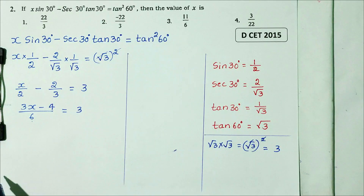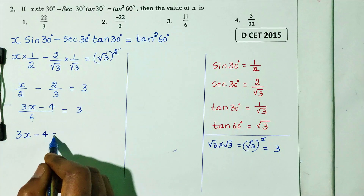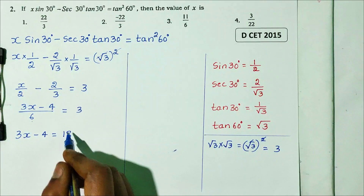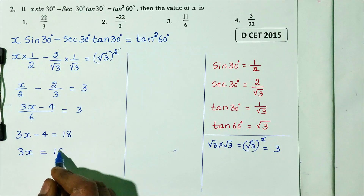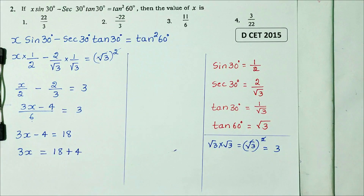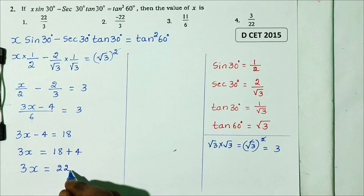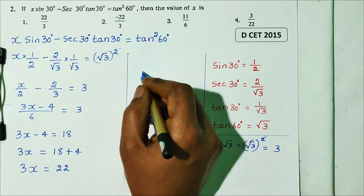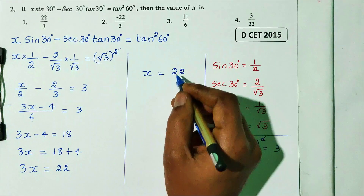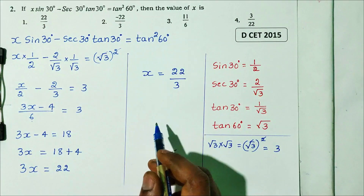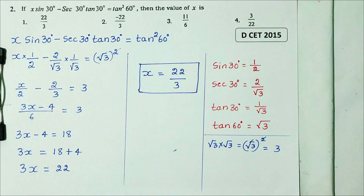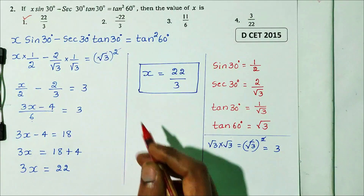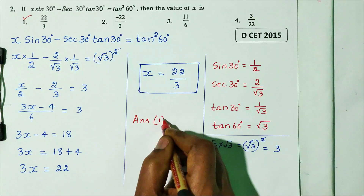Continuing: 3x minus 4 = 18, so 3x = 18 plus 4 = 22, giving x = 22/3. So the answer is x equals 22 by 3.